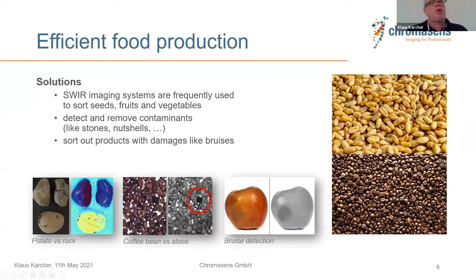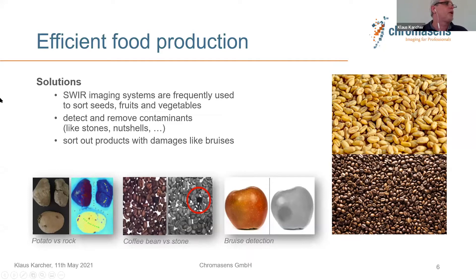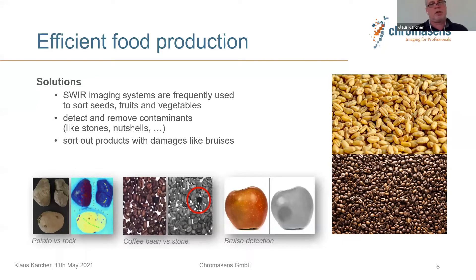Another very important topic is food production. We already have several customers in this area. It's a physical line scan application for sorting seeds, fruits, and vegetables. One use case is detecting contaminants like stones or nutshells — for example, when processing nuts and removing the shells — or sorting out products with damage like bruises on apples. Line scan is typically suited for fast-moving smaller objects; larger fruits like apples may be better handled with area scan.